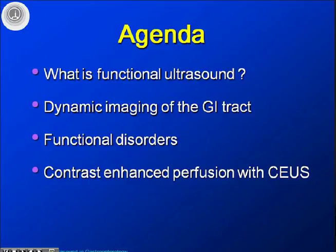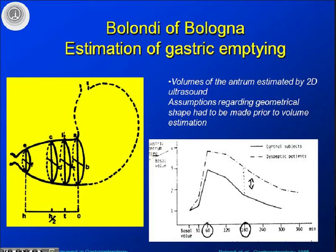The next point on the agenda is functional disorders, another aspect of functional imaging with ultrasound. This story started back in the 70s and 80s, and one of the pioneers was Professor Bolondi from Bologna, who began doing gastric emptying studies by ultrasound. He used 2D ultrasound to estimate volumes of the distal gastric antrum and measure the emptying of a standard Italian meal like pizza or lasagne, finding that dyspeptic patients emptied more slowly than healthy controls.